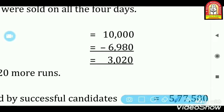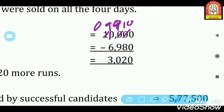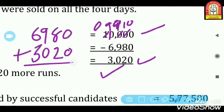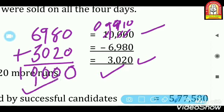10,000 minus 6,980: 0 minus 0 = 0. 0 minus 8 — not possible, so borrow: 10 minus 8 = 2, carry. 0 minus 9 — borrow: 9 minus 9 = 0. 9 minus 6 = 3. 0 minus 0 = 0. So the answer is 3,020 runs. अब वो 3,020 runs और करेगा, तो total 6,980 + 3,020 = 10,000 runs — उसकी wish पूरी हो जाएगी।